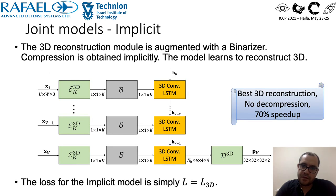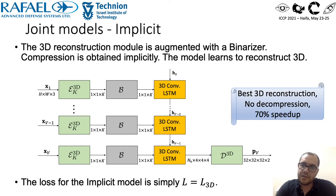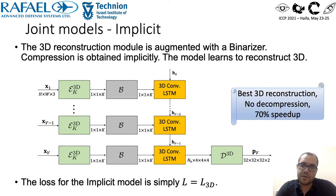The last architecture is the implicit one. It is simply a 3D reconstruction network augmented by a binarizer. We train it using the 3D loss only, meaning it simply learns to reconstruct 3D. Compression occurs implicitly due to the binarizer. This model performs really well and is also very fast. However, it doesn't perform image decompression and a separate model needs to be trained per compression rate.